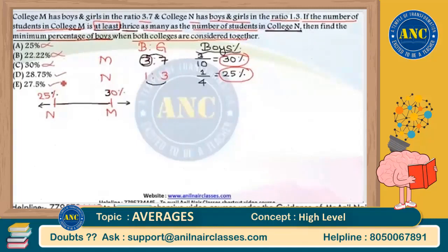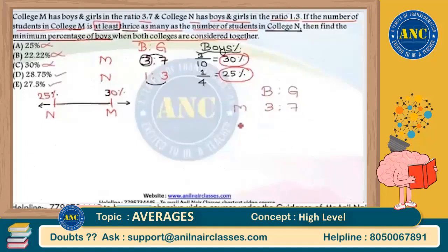Let us continue further. Boys and girls are in the ratio 3 is to 7 in college M, and 1 is to 3 in college N. It is also given that the number of students in college M is at least three times the number of students in college N.